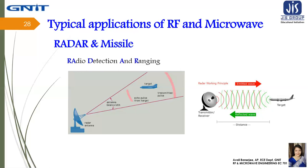The antenna is usually curved so it focuses the waves into a precise narrow beam. Radar antennas also typically rotate so they can detect movements over a large area. The radio waves travel outward from the antenna at the speed of light and keep going until they hit something. Then some of them bounce back toward the antenna in a beam of reflected radio waves, also travelling at the speed of light.